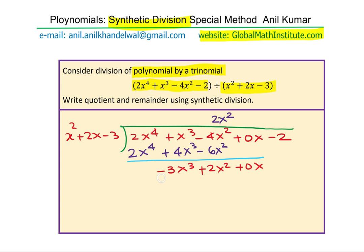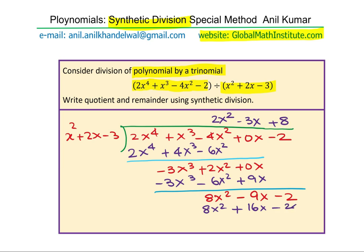The next term has to be minus 3x in the quotient. Multiplying by minus 3x, we get minus 3x cube minus 6x square plus 9x. And now, the next step will be to subtract and when we do so, we get 8x square minus 9x and bring down minus 2. That will go 8 times. So, we could write here plus 8. So, we get 8x square plus 16x minus 24.